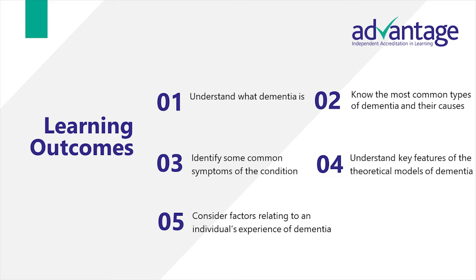Firstly, understand what dementia is. Secondly, know the most common types of dementia and their causes. Thirdly, identify some common symptoms of the condition. Fourthly, understand key features of the theoretical models of dementia. And lastly, consider factors relating to an individual's experience of dementia.